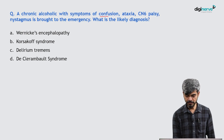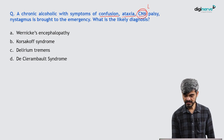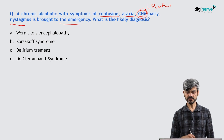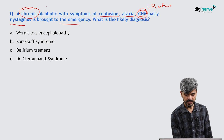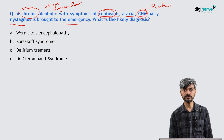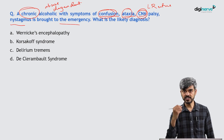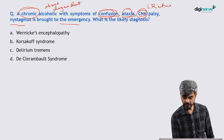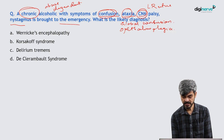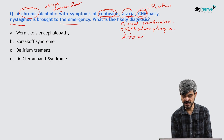A chronic alcoholic with symptoms of confusion, ataxia, abducent nerve palsy, lateral rectus palsy, and nystagmus is brought to the emergency. What is the likely diagnosis? This person is a chronic alcoholic and has developed altered sensorium, confusion, ataxia, unsteady gait, lateral rectus palsy, and ophthalmoplegia.